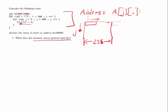The address for a[j][i] is going to be the base address a, plus — for each time we increment j we have to go a whole other row — so we're going to have 256 times j plus i. Each time we increment i we're moving over one element, and each element is four bytes big. So our address is going to be the base address a, plus 256 times j (because this bottom dimension is 256), plus i times the size of each element, four.